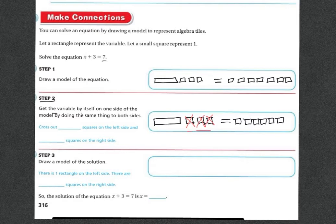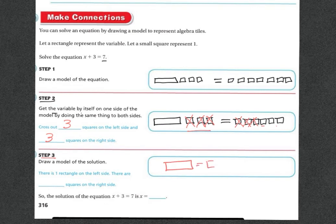Whatever I do to one side, I have to do to the other side. So I have to get rid of 1, 2, 3 on this side — crossing out 3 squares on the left and 3 squares on the right. Step 3: draw a model of the solution. I'm left with X on one side, and 1, 2, 3 single squares on the other. There is one rectangle on the left side and 3 squares on the right side. So the solution of X plus 3 equals 7 is X equals 3.